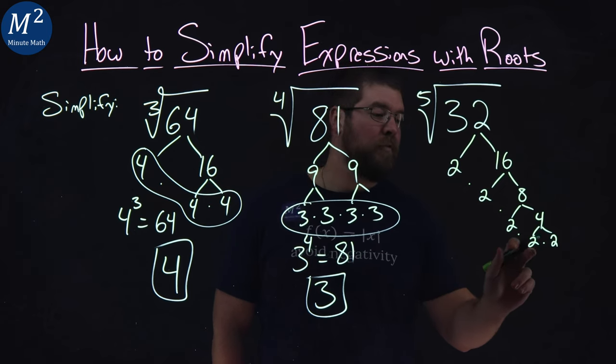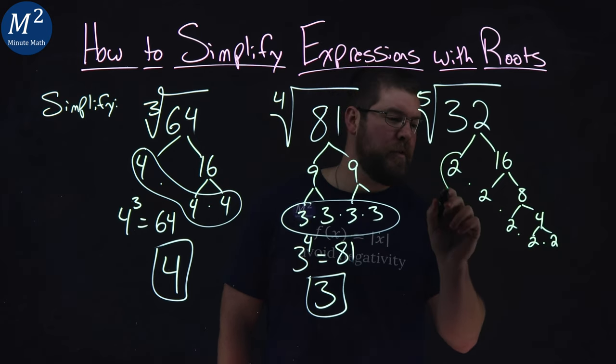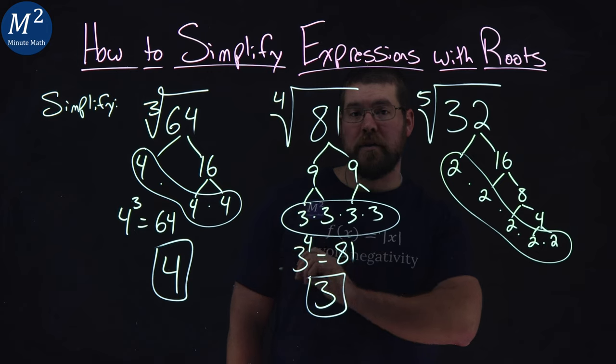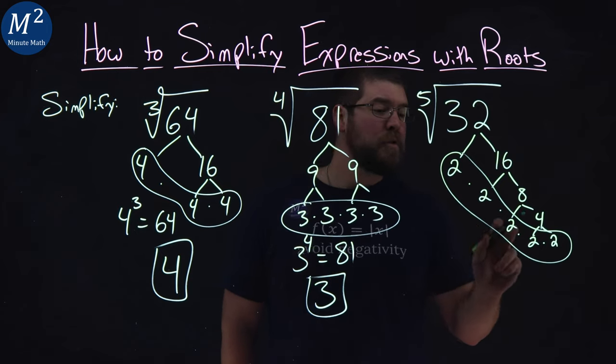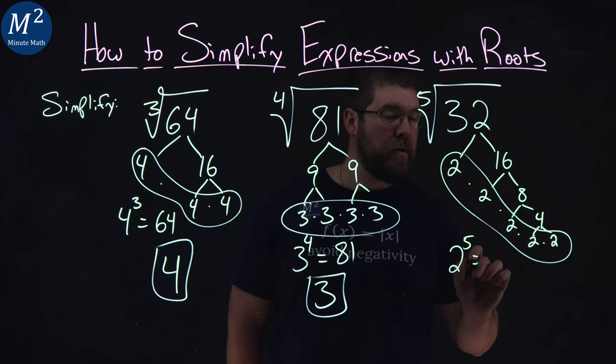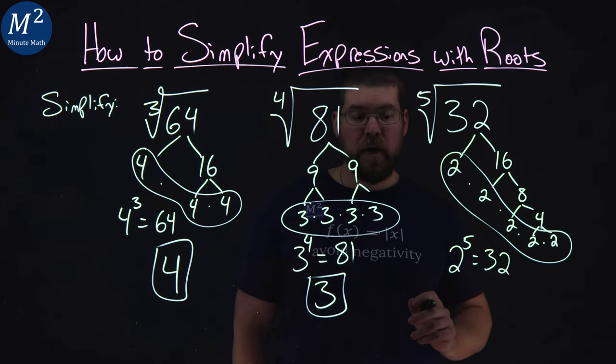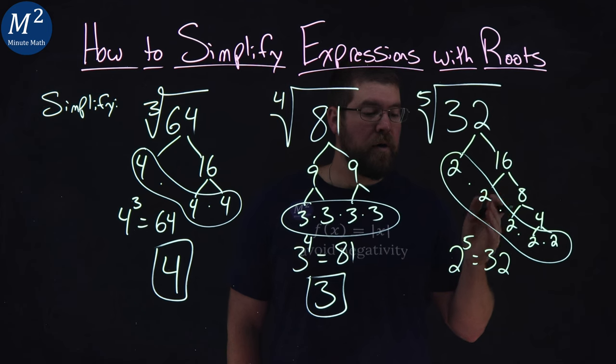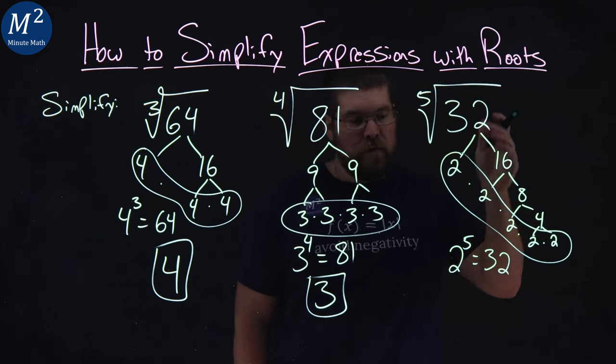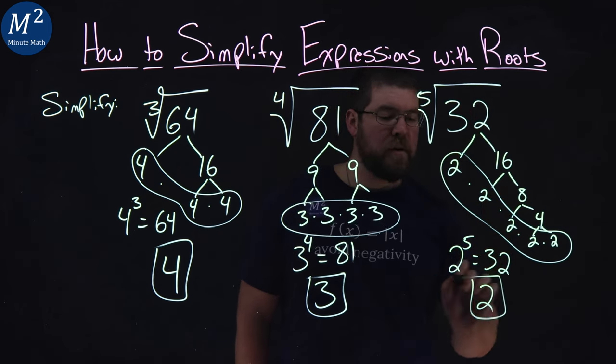How many 2's do we see? We have 1, 2, 3, 4, 5. Isn't that lovely? Works out just right. And now 2 to the fifth power is equal to that 32, right? 2 multiplied by itself 5 times. And so then, therefore, the fifth root of 32 is just a 2.